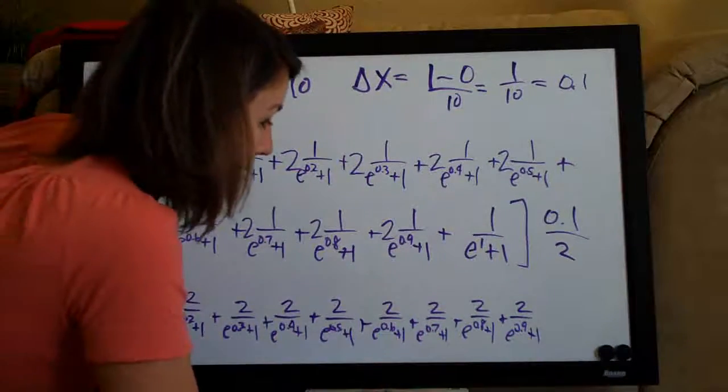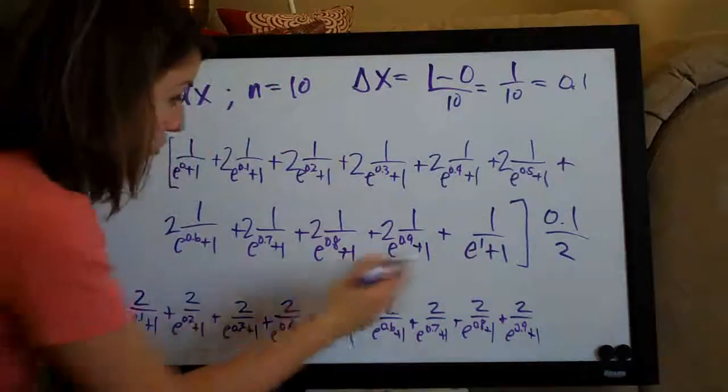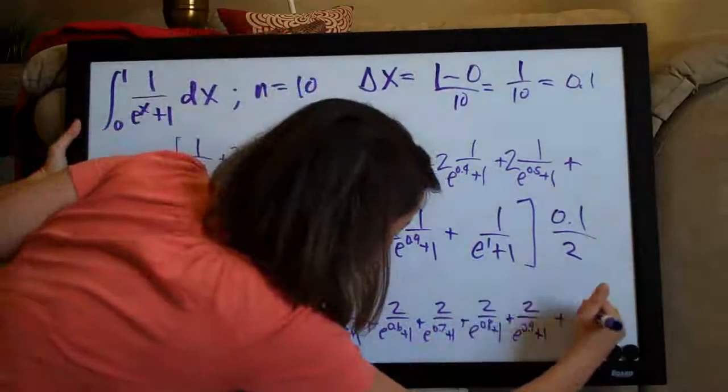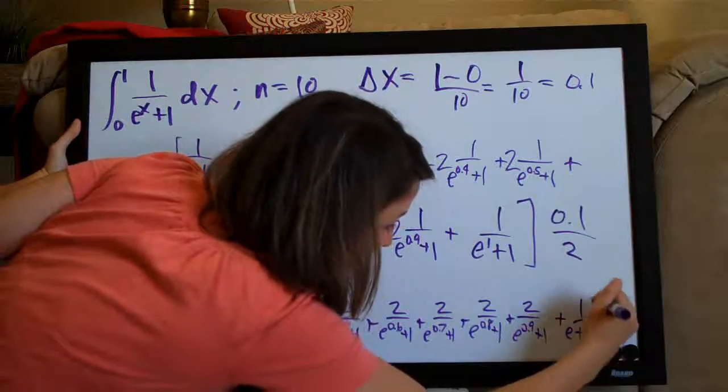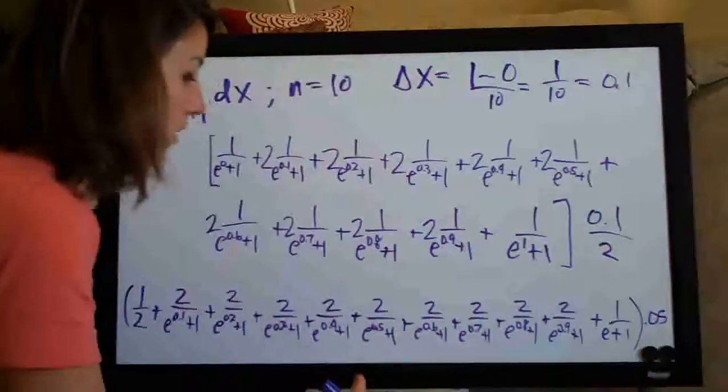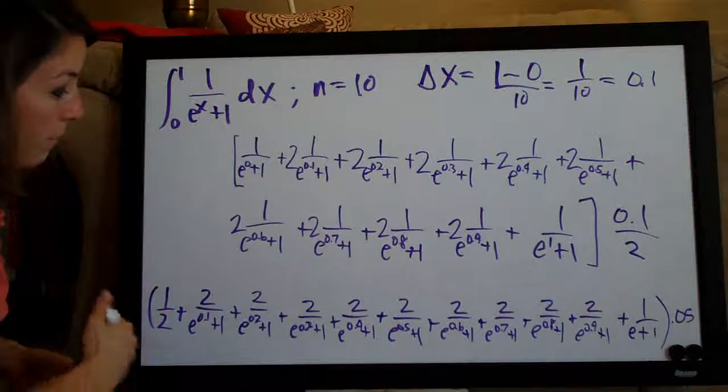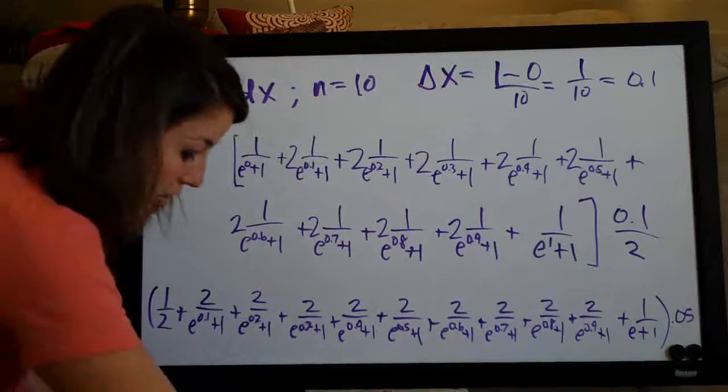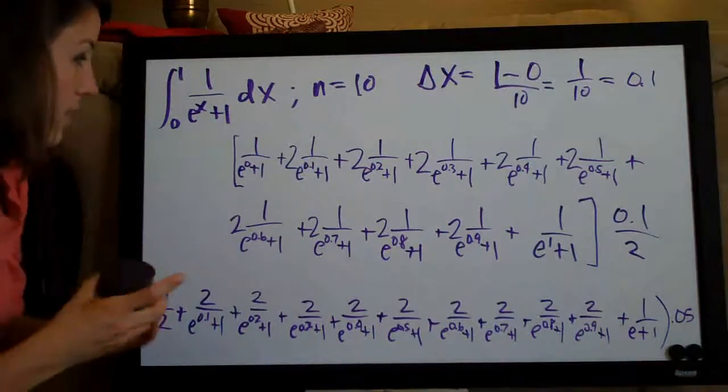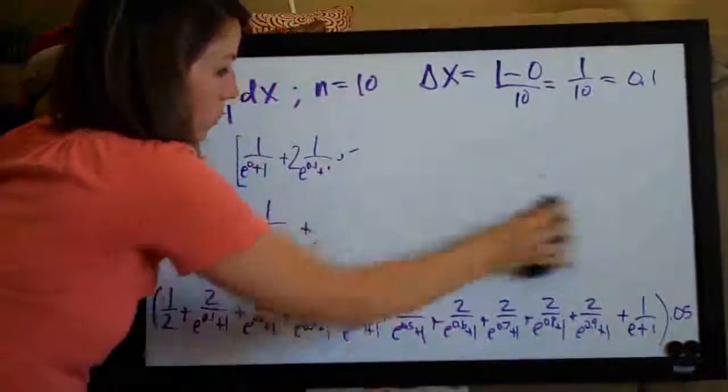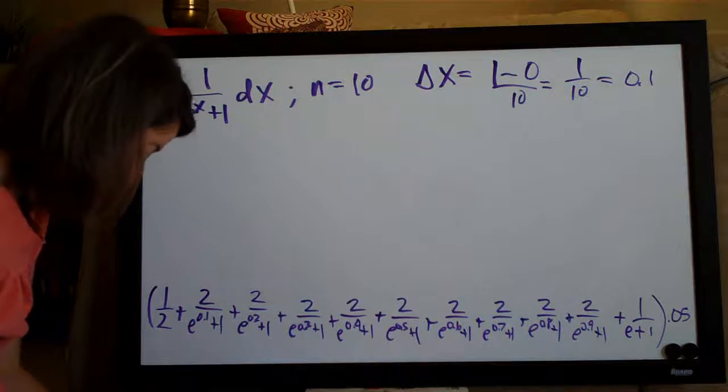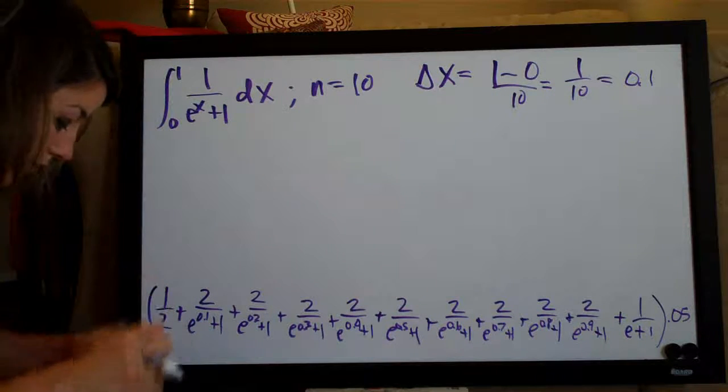Then we've got, I'm just going to write this out. Two over e to the zero point one plus one plus two over e to the zero point two plus one plus two over e to the zero point three plus one. And then remember we don't multiply the first term or the last term by two. So this is just e to the one is e so this is just plus one over e plus one. And then the whole thing, point one divided by two is point zero five. So that is pretty much as simplified as we're going to get.